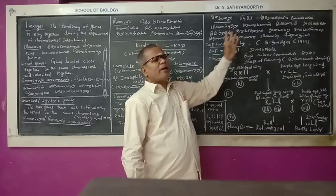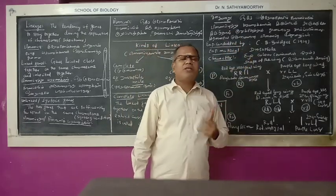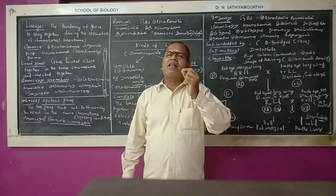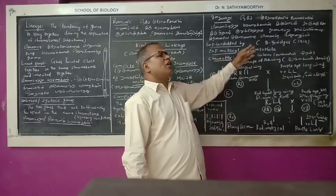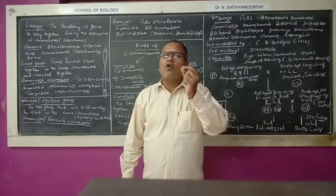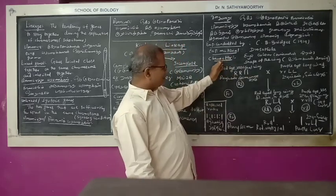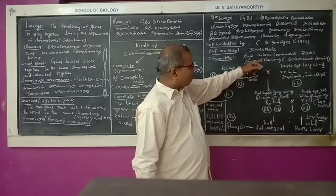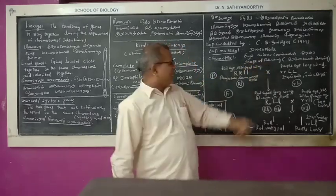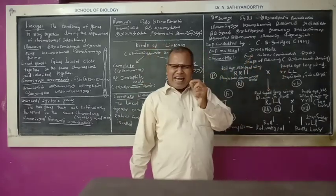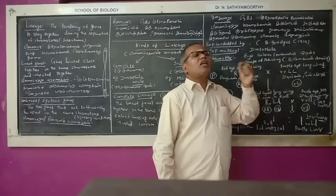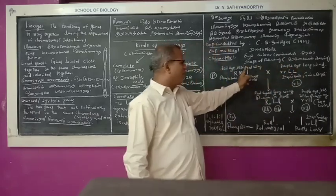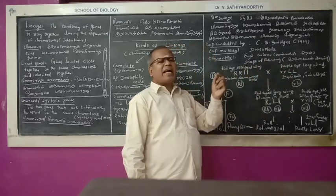This experiment was conducted by C.V. Bridges. The experiment material is Drosophila melanogaster. The characters selected for the experiment are eye color and shape of the wing. Eye color: red is dominant over purple. Wing shape: long wings are dominant over vestigial wings.